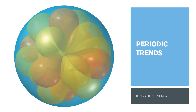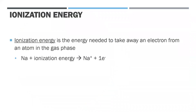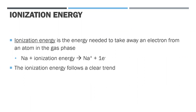The next periodic trend is ionization energy. Ionization energy is the energy needed to take away an electron from an atom in the gas phase — it could also be an ion, but for the most part just think of it as the energy required to remove an electron from different elements. We'll see that ionization energy follows a clear trend that is somewhat inversely related to the atomic size of atoms.